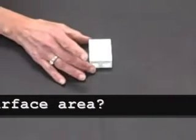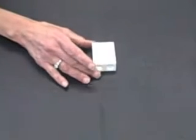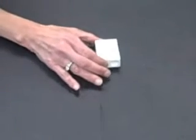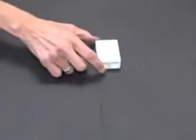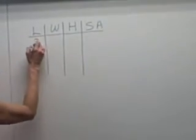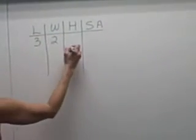So if we've got one rectangular prism here, and the dimensions of that rectangular prism are two wide and three long and one high, I'm going to write those down up here. It's got a length of three, a width of two, and a height of one. Now we have to figure out the surface area for that.